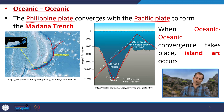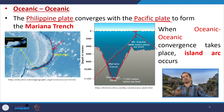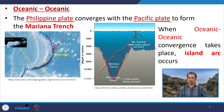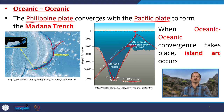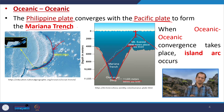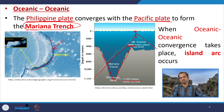If we put Mount Everest under the Mariana Trench, about 2 kilometers of water depth still remains. The Mariana Trench is around 11 kilometers deep, while Mount Everest is around 8.5 to 9 kilometers. This is the deepest trench in the world — a product of oceanic-oceanic convergence where the Pacific plate subducts under the Philippine plate.